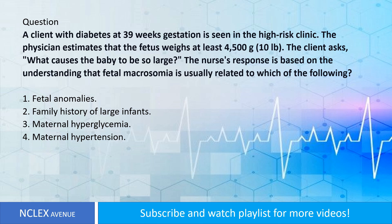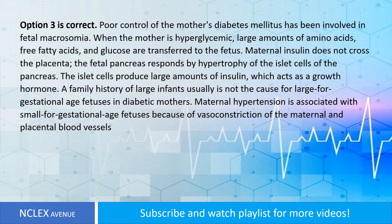Question: A client with diabetes at 39 weeks gestation is seen in the high-risk clinic. The physician estimates that the fetus weighs at least 4,500 grams (10 pounds). The client asks what causes the baby to be so large. The nurse's response is based on the understanding that fetal macrosomia is usually related to which of the following? One: fetal anomalies. Two: family history of large infants. Three: maternal hyperglycemia. Four: maternal hypertension.